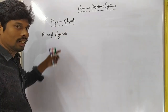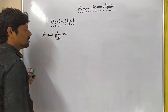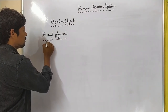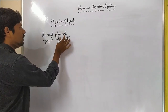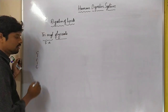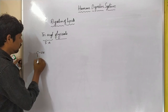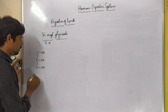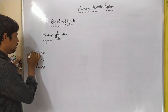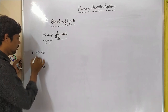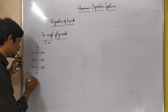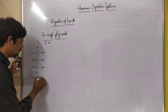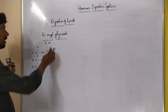Triacylglycerol contains glycerol and fatty acids. Glycerol is a three-carbon moiety that contains an OH group. This is the glycerol structure.